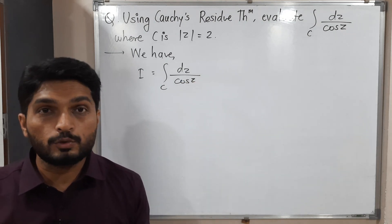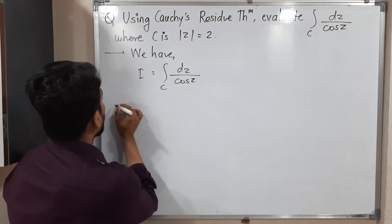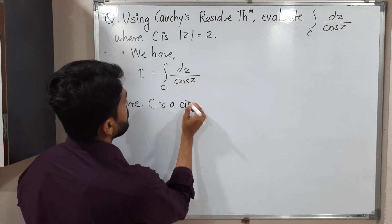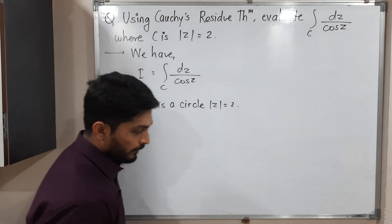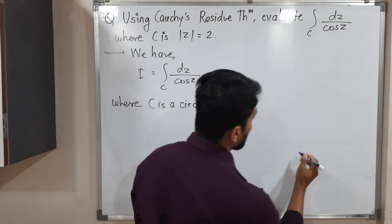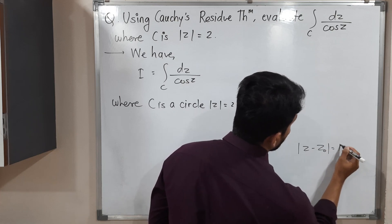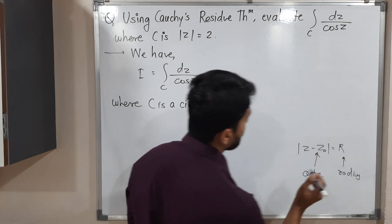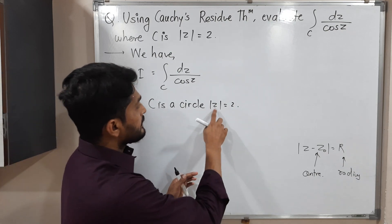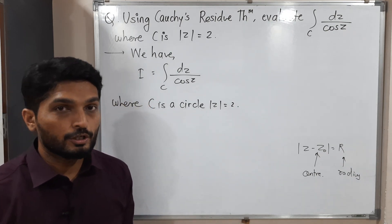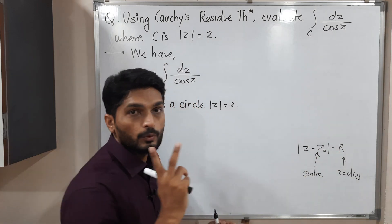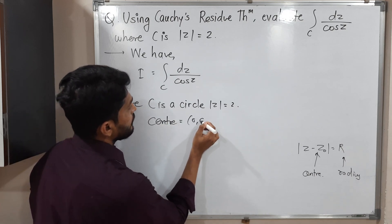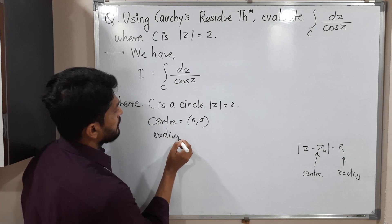The most important thing is curve C. They have given C is a curve mod z is equal to 2. The standard equation of a circle is mod z minus z-naught is equal to R, where R is the radius and z-naught is the center. Here, since there is nothing subtracted from z, the center is 0 and the radius is 2.